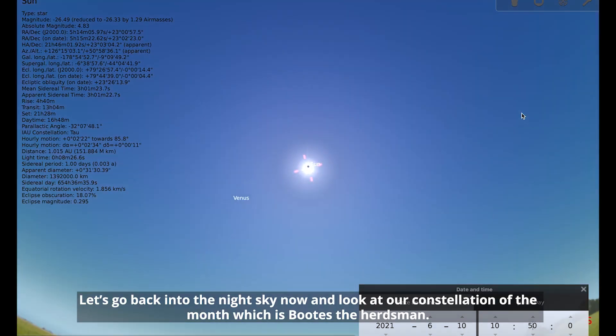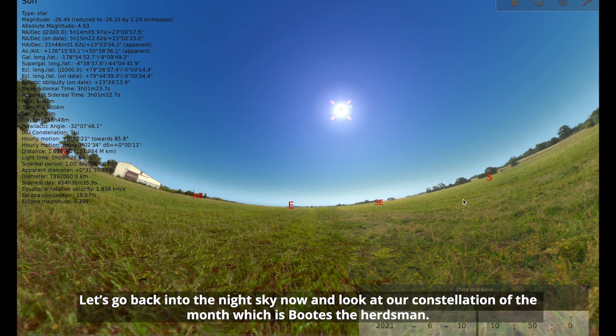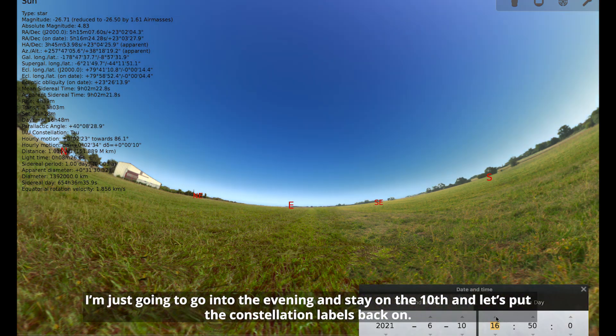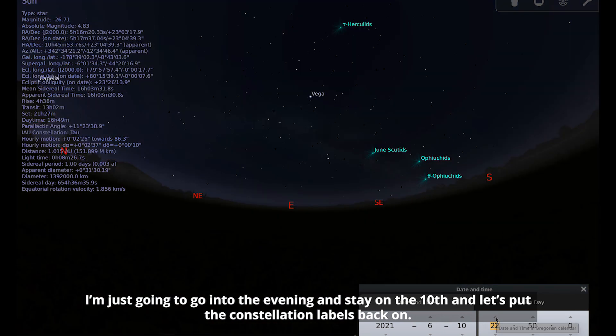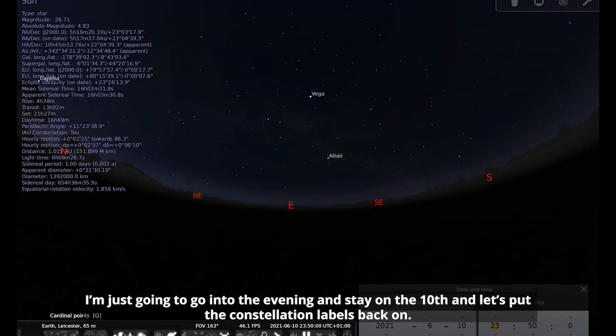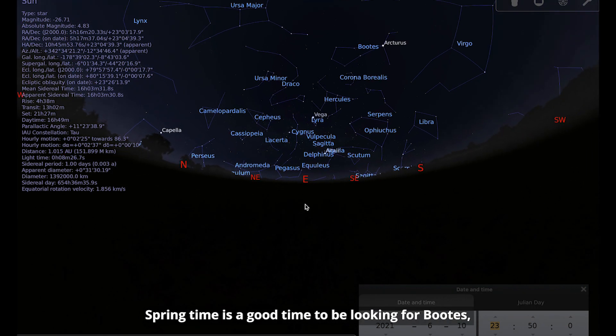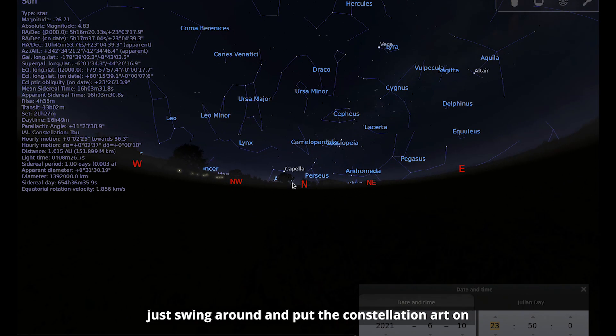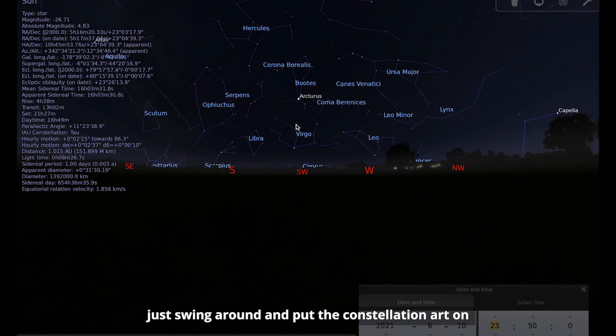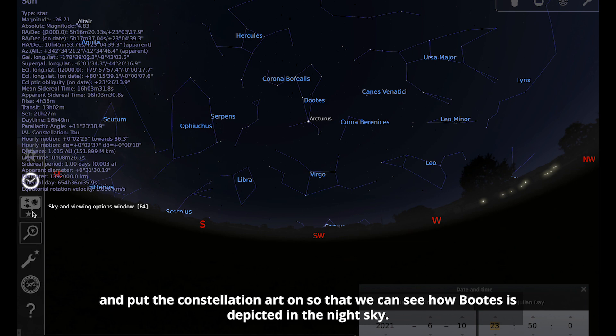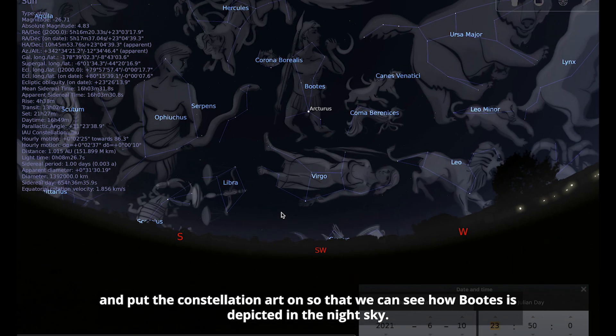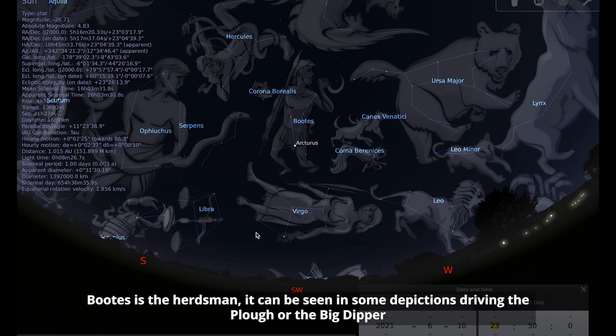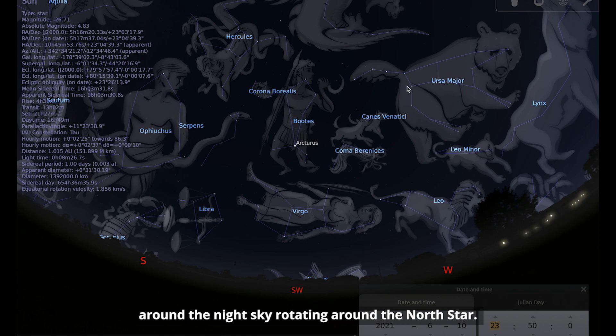Let's go back into the night sky now and look at our constellation of the month which is Bootes, the herdsman. So I'm just going to go into the evening. We'll stay on the 10th. And let's put the constellation labels back on. So springtime is a good time to be looking for Bootes. Let's swing around and put the constellation art on so that we can see how Bootes is depicted in the night sky. So Bootes is the herdsman. He can be seen in some depictions driving the plough or the Big Dipper around the night sky rotating around the north star.